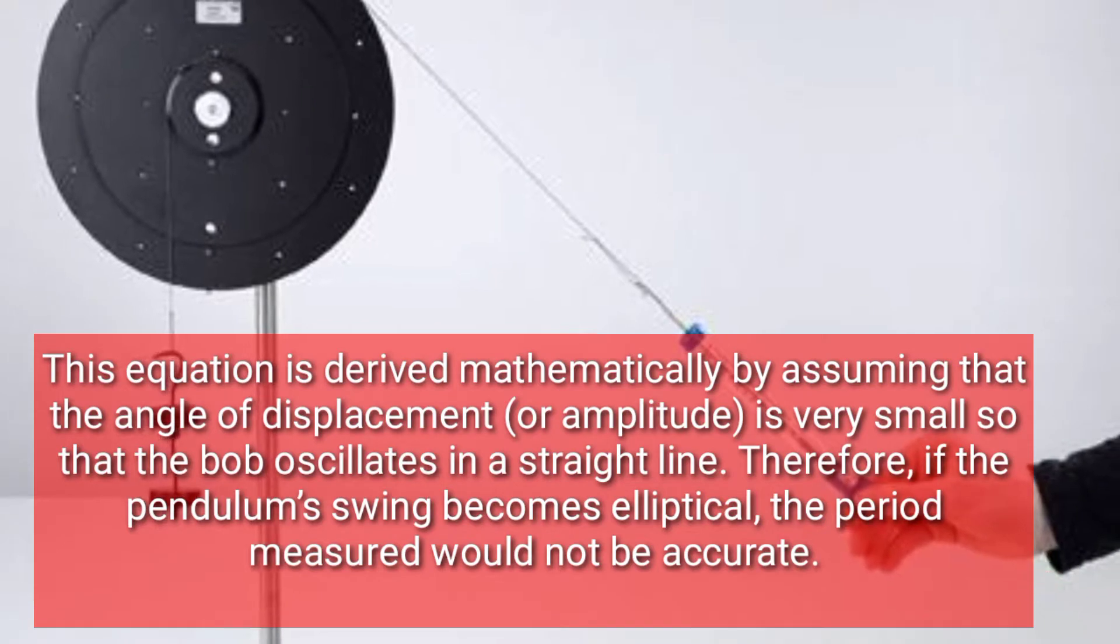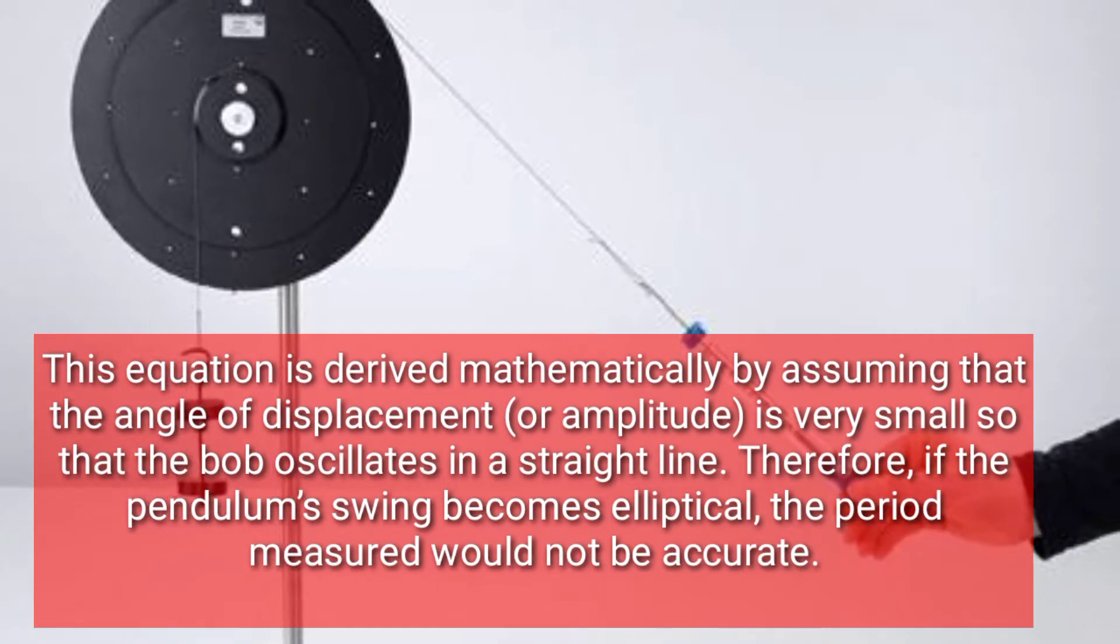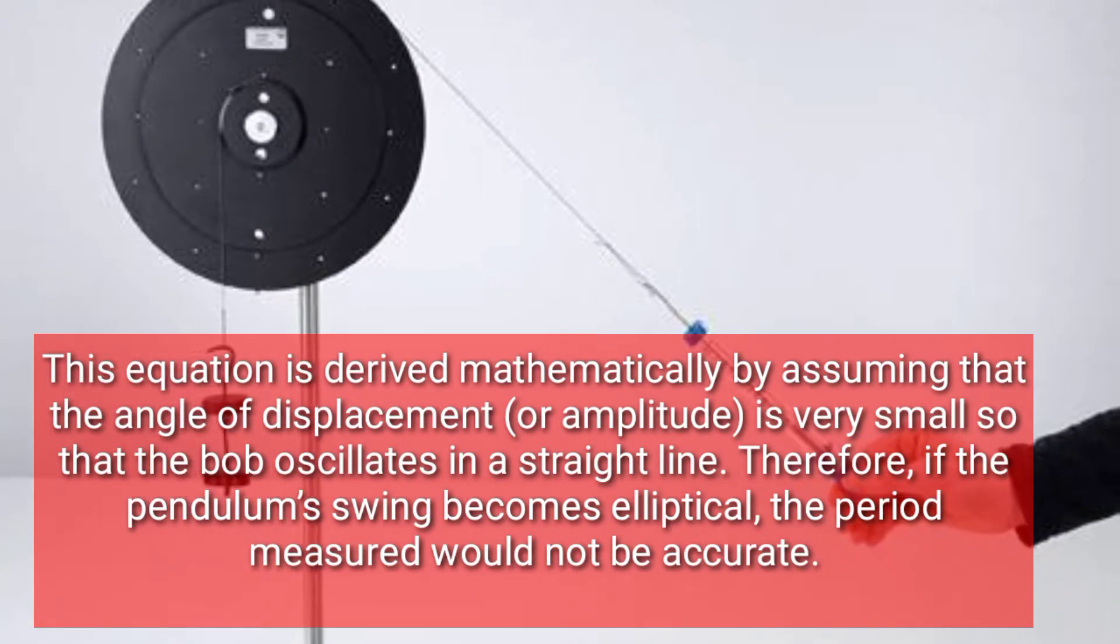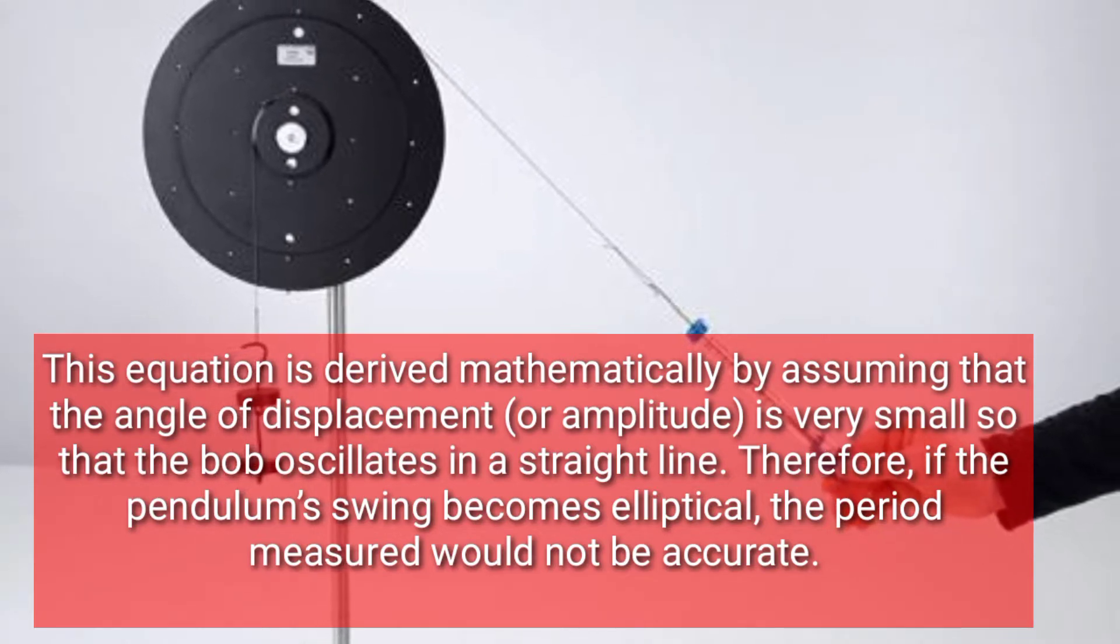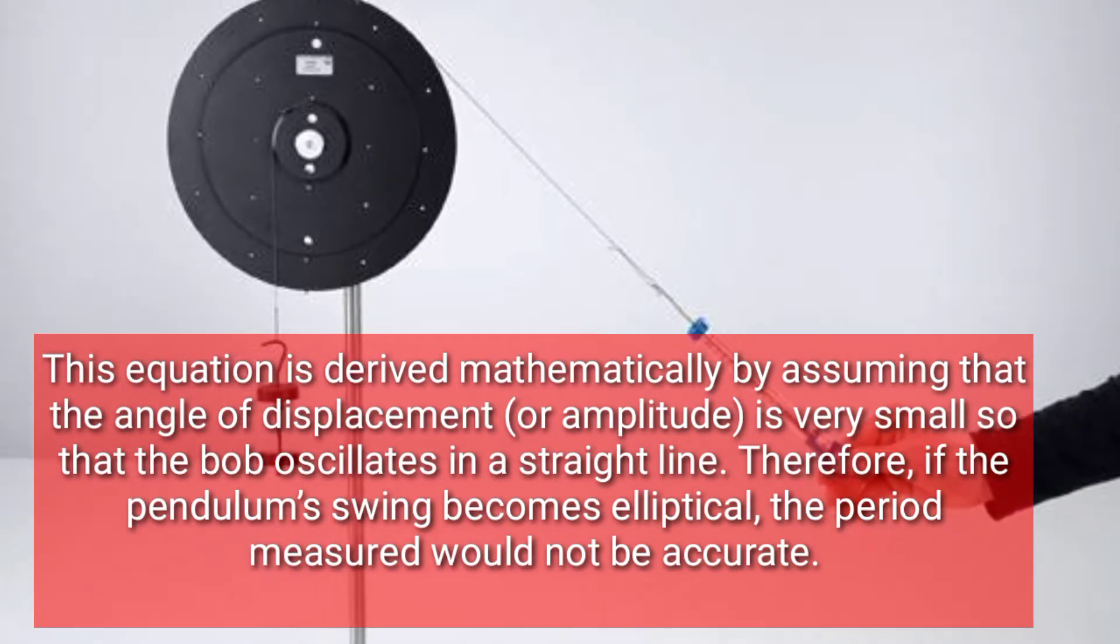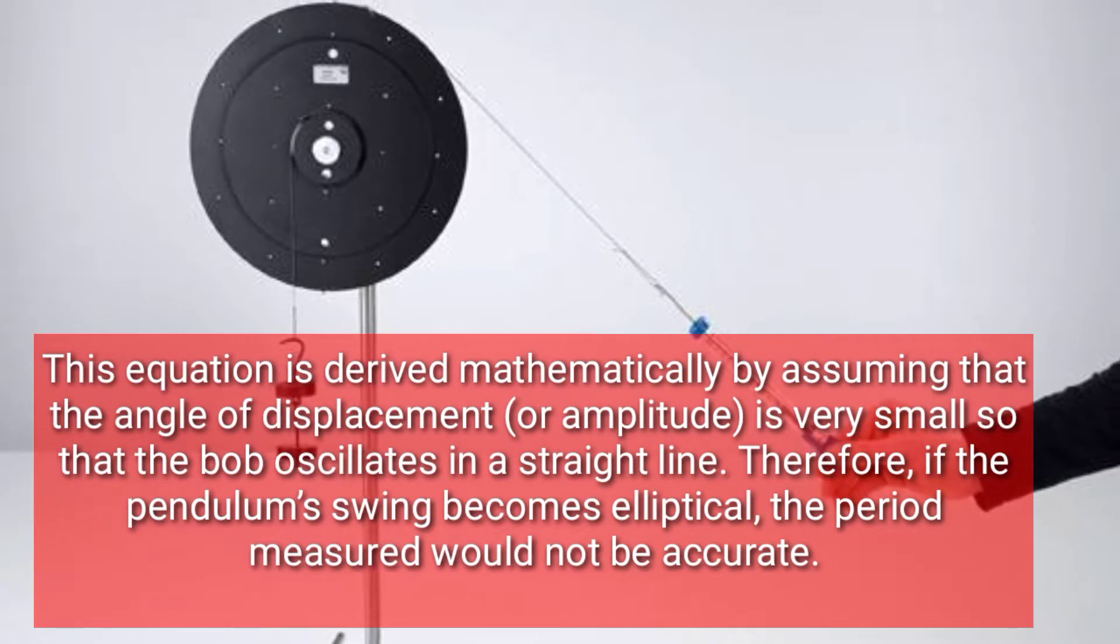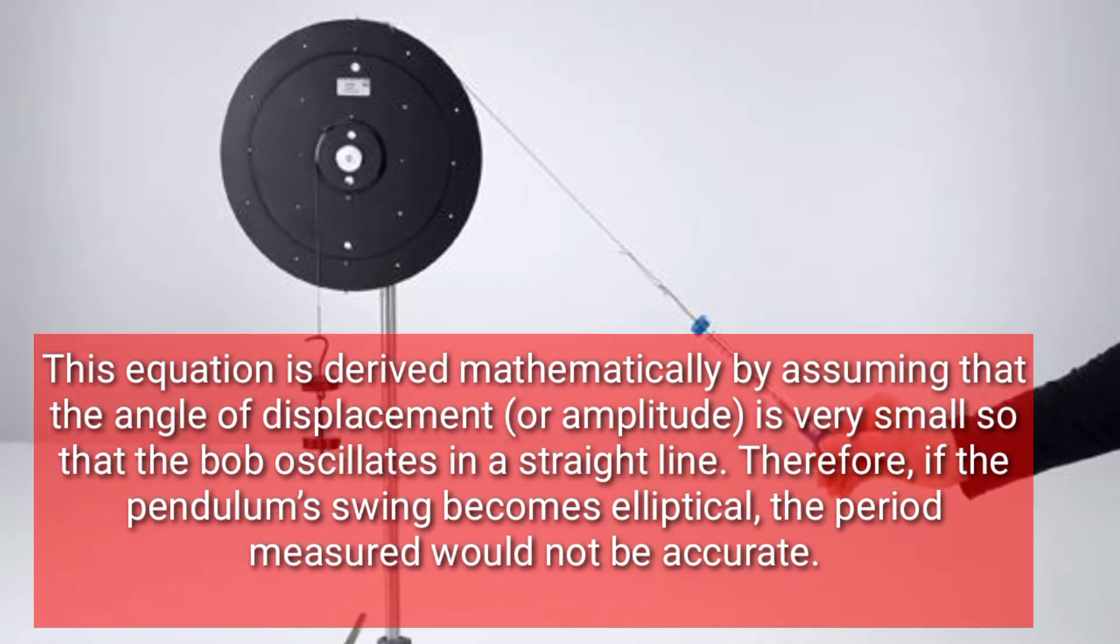This equation is derived mathematically by assuming that the angle of displacement or amplitude is very small so that the bob oscillates in a straight line. Therefore, if the pendulum's swing becomes elliptical, the period measured would not be accurate.